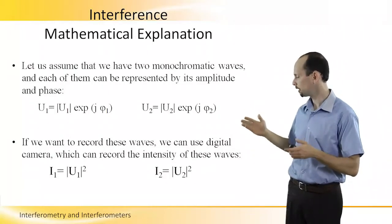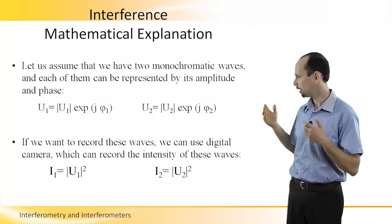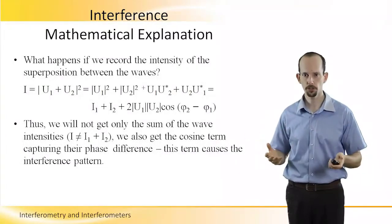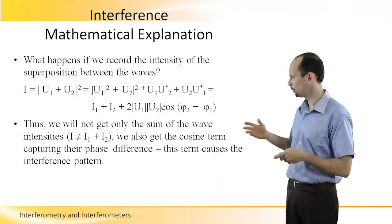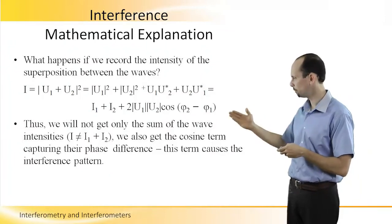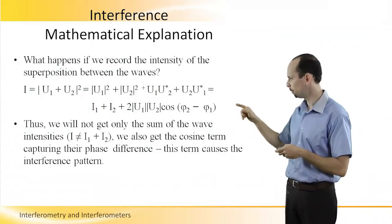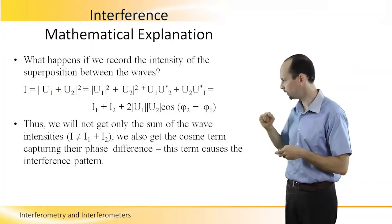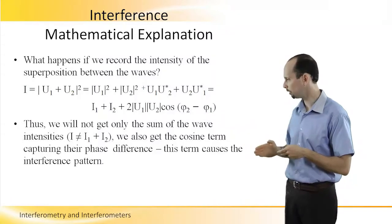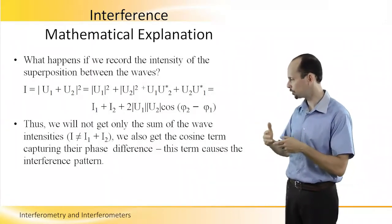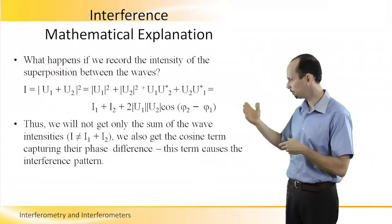The same thing applies to I2, the intensity created by the second wave: I2 equals |U2| squared. What happens if we want to record the intensity of the superposition between the waves? |U1 + U2| squared equals, because each of them is a complex number, |U1| squared plus |U2| squared plus the cross-term U1 multiplied by U2 conjugate, plus U2 multiplied by U1 conjugate. That means we did not get a simple summation of the intensities. The total intensity I is not equal to I1 plus I2, because these two waves interact with each other. This is the interference phenomenon. This cosine pattern is the interference.